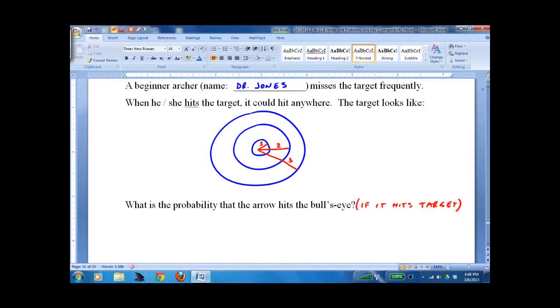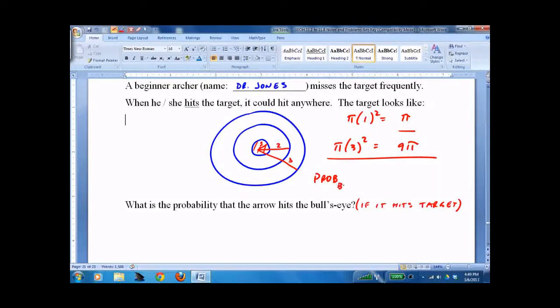It's win over all possibilities. The win is hitting the bullseye in the middle. That area is π times r squared: 1 squared equals π. The whole target is π times 3 squared, which is 9π. So probability of a bullseye equals π over 9π, which is 1 over 9. That's how we do probability: success over total.